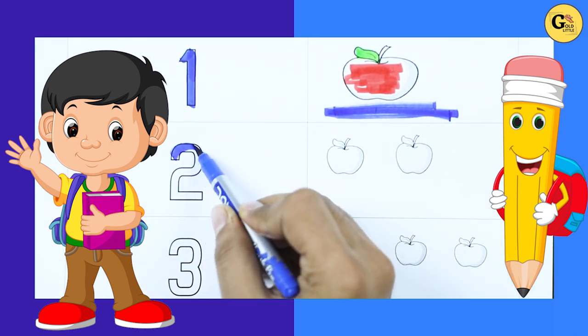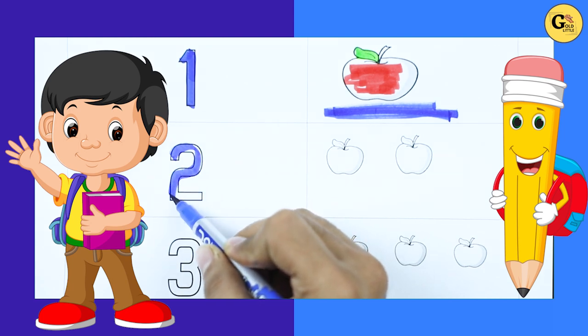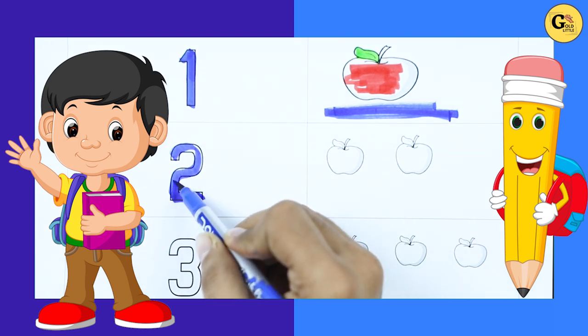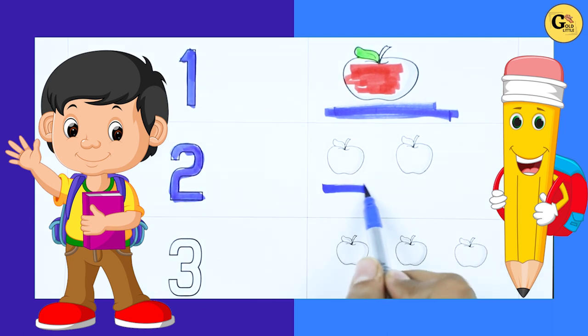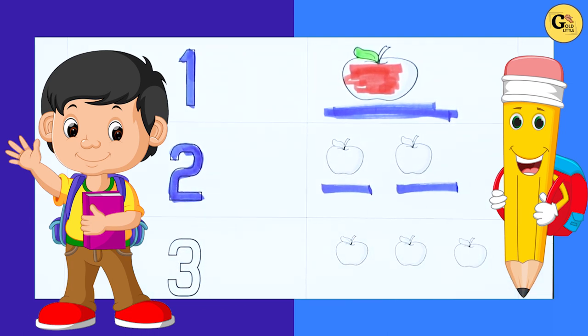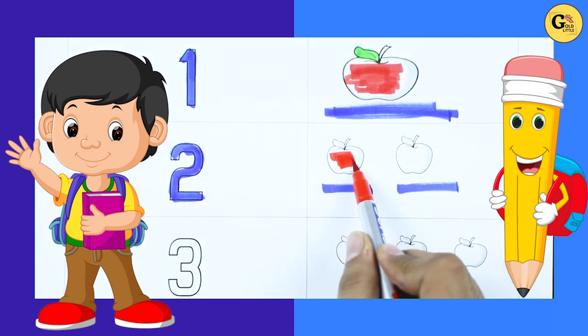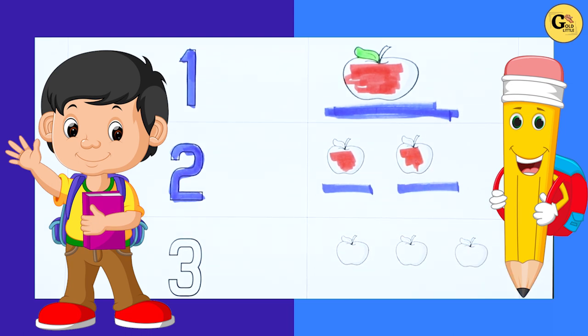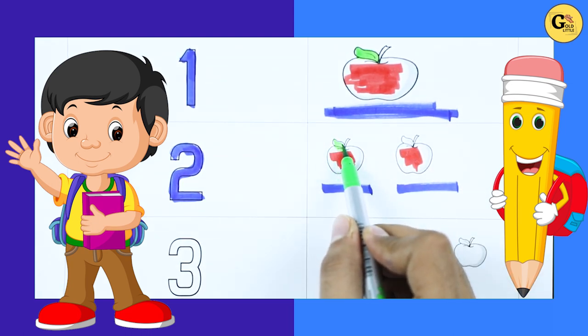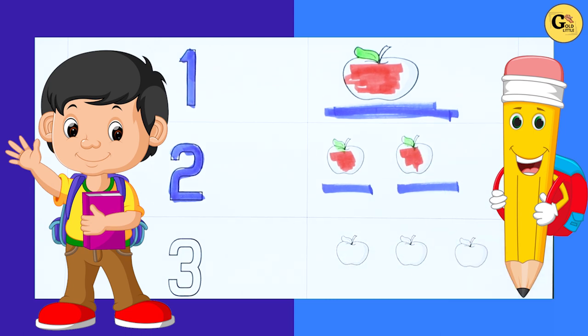Number 2, number 2 with blue color. How many apple here? 1 apple, 2 apple, it's 2 apple. Red color, 1 apple, 1 leaf, 2 leaf, it's apple.